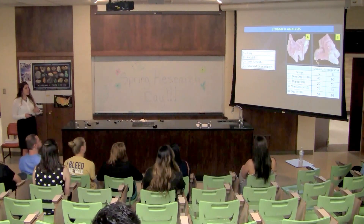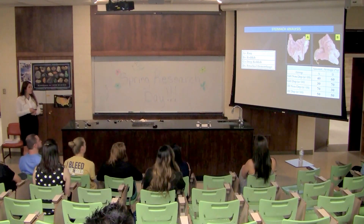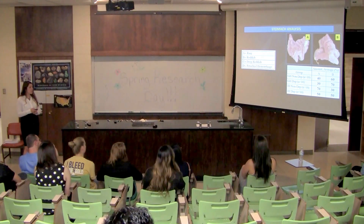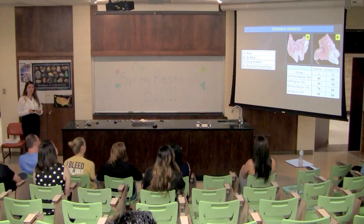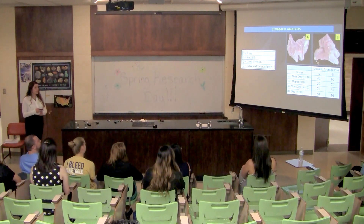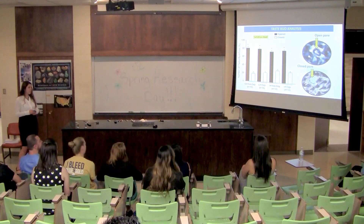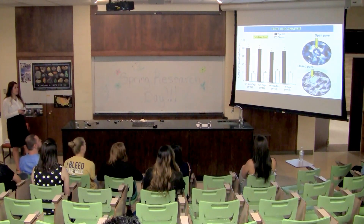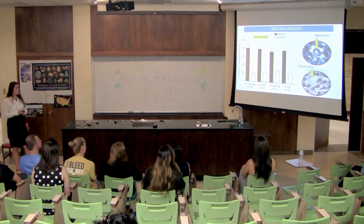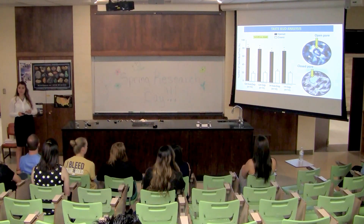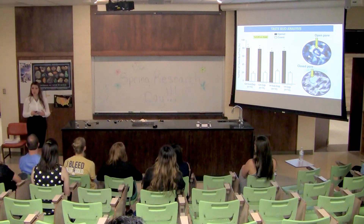Stomach pigmentation was graded on a four-point scale—A being rosy, B being reddish, C being deep reddish, and D having pinpoint ulcers. Analysis only noted the presence of A and B, and there was no difference in distribution between A's and B's among our four groups of rats. Taste buds were counted and classified as having an open pore or a closed pore. There was a higher number of open pores than closed pores among all four groups, telling us that each group of rats is tasting the salt equally.